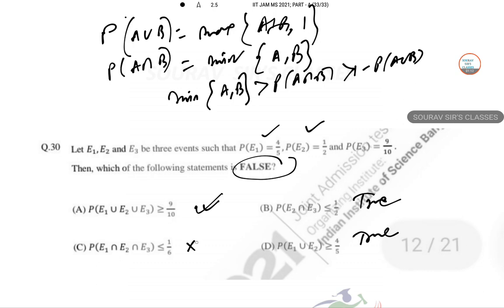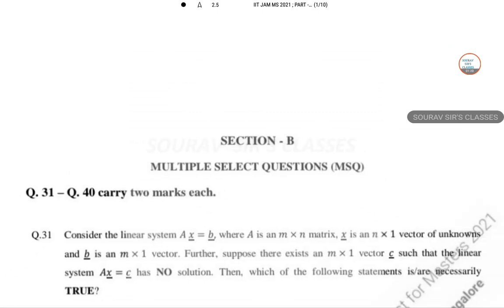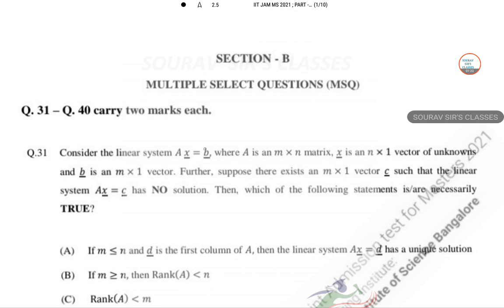Next question is 31. This time multiple select options can be correct. Consider the linear system where A is an M into N matrix and X is N into 1 vector. AX equal to C has no solution. Which of the following is necessarily true?